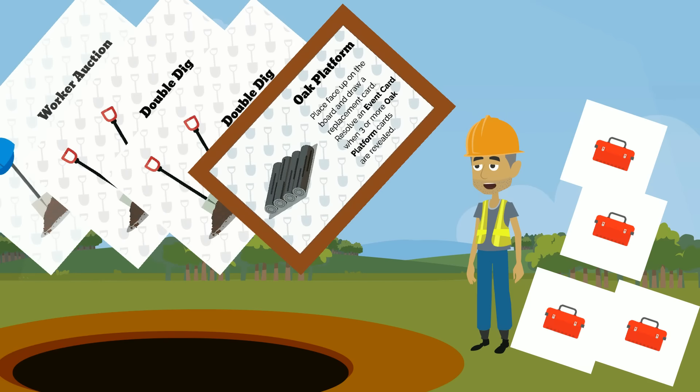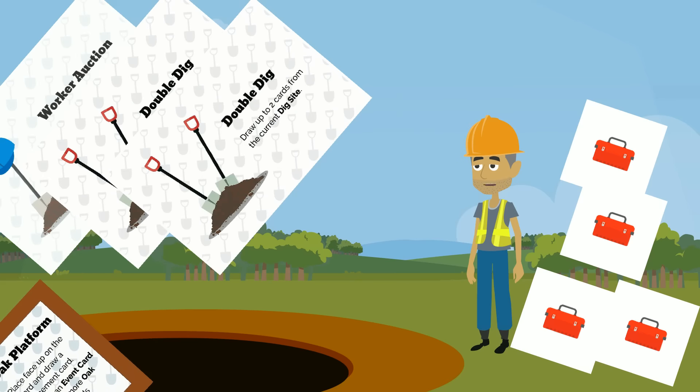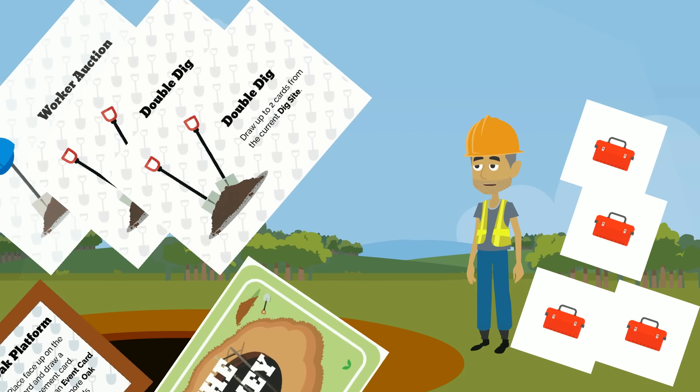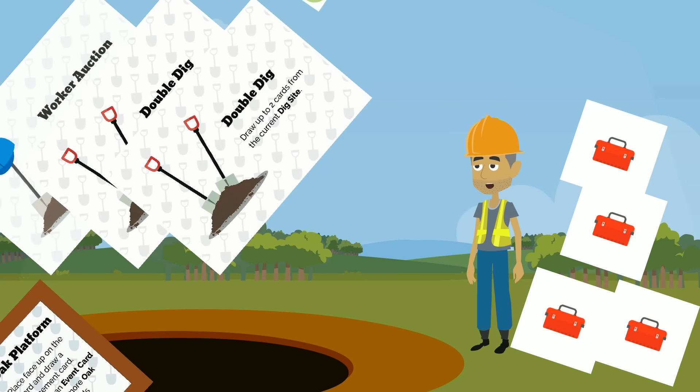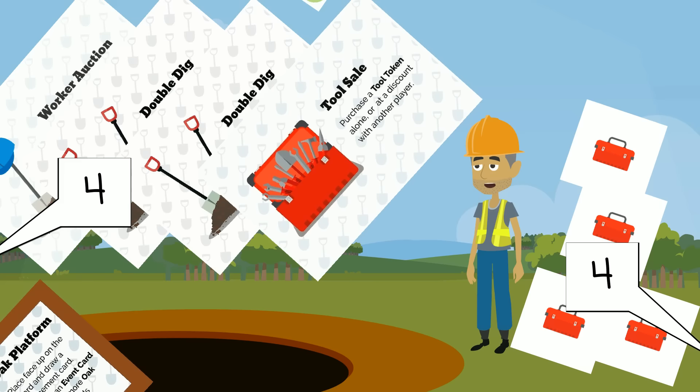If you draw an oak platform card, discard it face up on the board. Draw a replacement card so that you always start your turn with the same number of money pit cards as tool tokens you have in your play area.